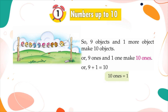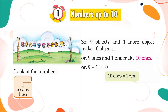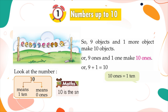Ten ones is equal to one ten. Look at the number: 1 means one ten, 0 means zero ones. Maths fact: Ten is the smallest two-digit number.